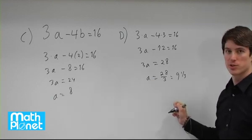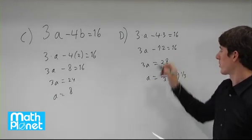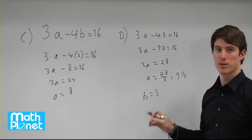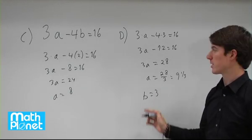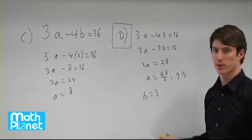So since a is not an integer, b is equal to 3 is not possible for a to get an integer even though b is. So the answer is d, b is equal to 3.